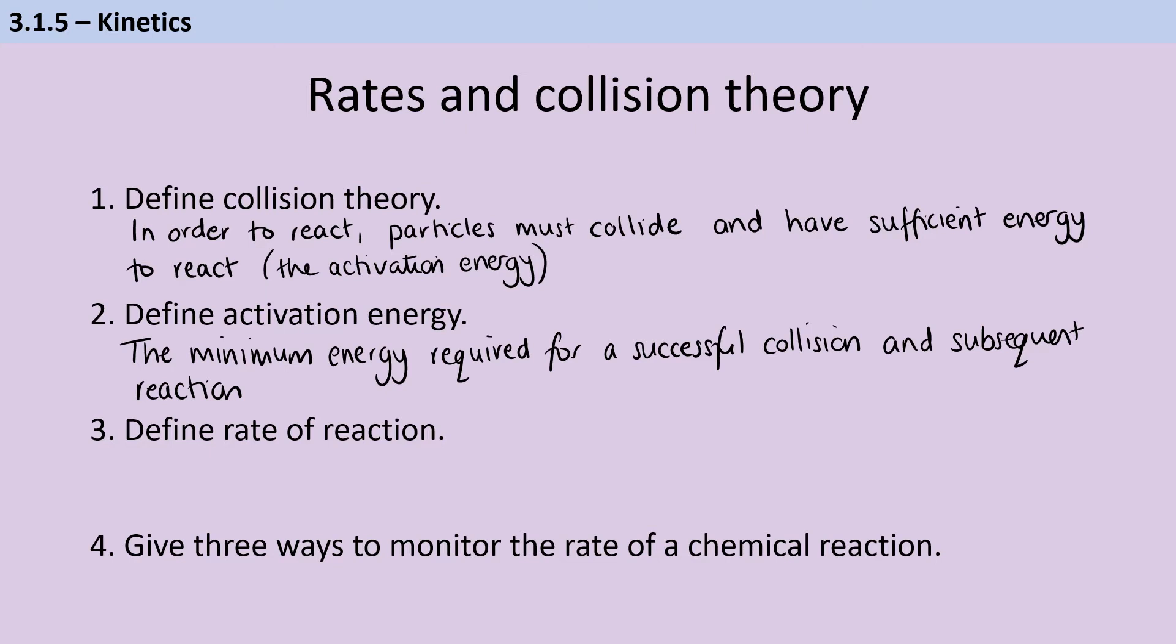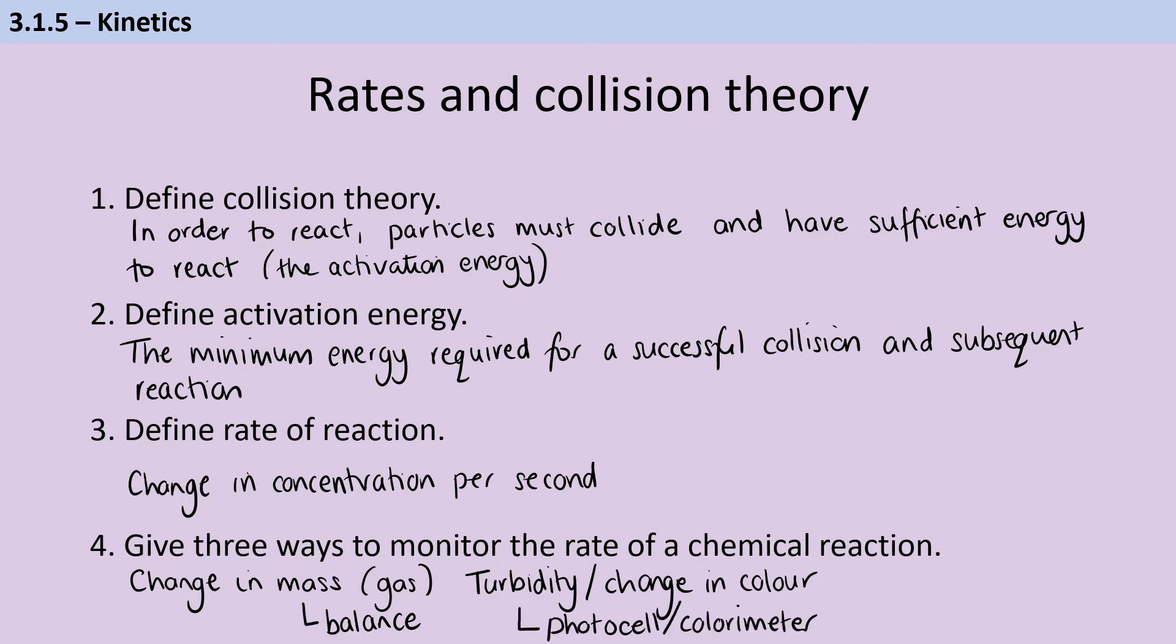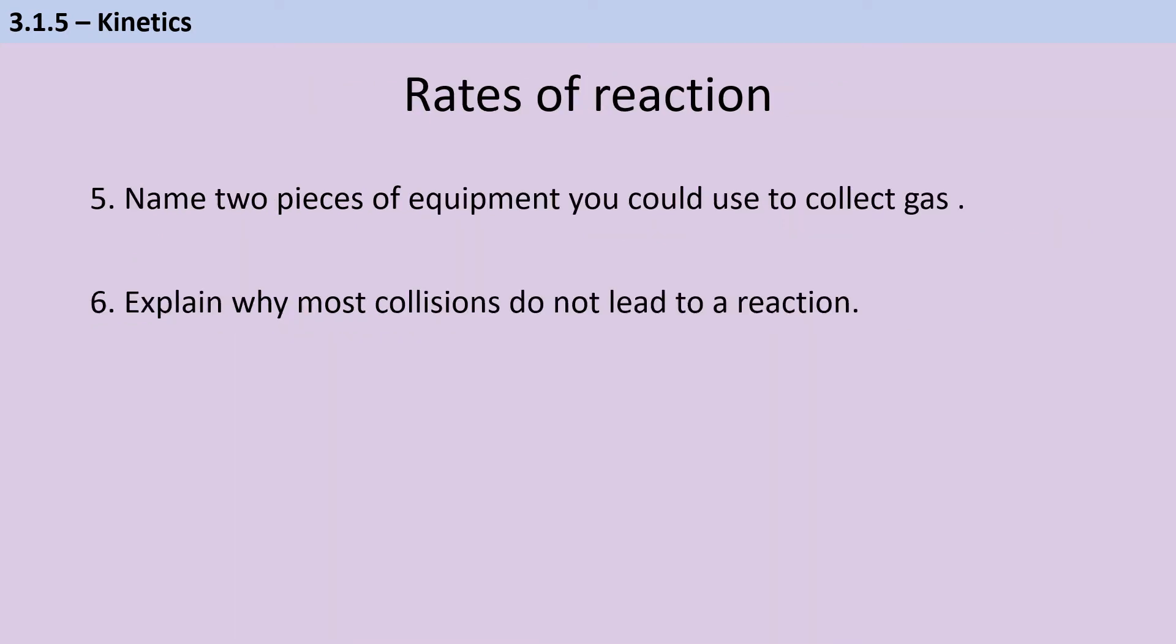Rate of reaction can be defined as the change in the concentration each second. And there are three main ways that we could monitor the progress of a chemical reaction. We could look at a change in mass, but that would only be possible if this is a reaction that either produces a gas or where one of the reactants is a gas, because otherwise we wouldn't see that change in mass because of the conservation of mass. And we could monitor that using a balance. Or we could look at a change in turbidity, which is cloudiness or a change in color. And those could be monitored either using a photo cell or using a colorimeter. And then finally, we could look at the production of gas directly. In order to collect that gas, you could either use a gas syringe to collect that gas directly. Or if that was not an option, you could collect gas over water using an upturned measuring cylinder. So this is also what we call the water displacement method.